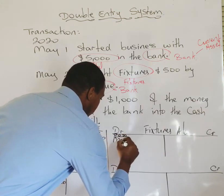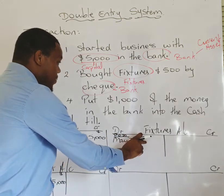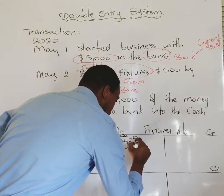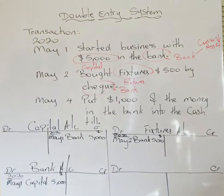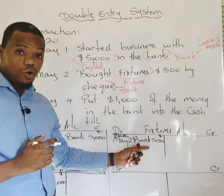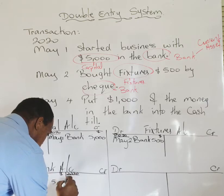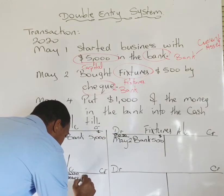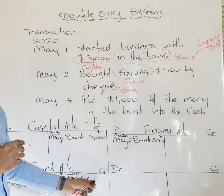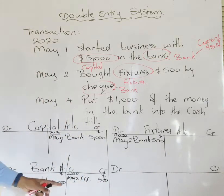We already have a bank account, so we just draw up our fixtures account. In the fixtures account on the debit side: 2020, May 2, then the name of the other account — bank — and the amount: five hundred dollars. In the bank account on the credit side: 2020, May 2, then the name of the other account — fixtures — and the amount: five hundred dollars. Transaction two is recorded.